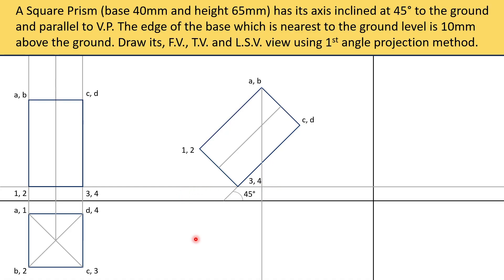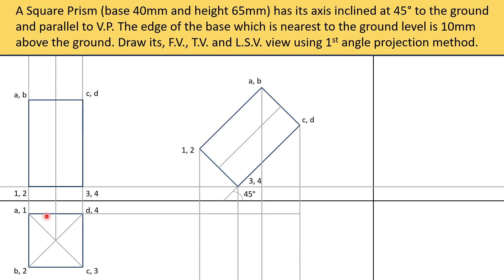Now we need to draw the top view of this object. You can see that we can draw the guiding lines. From A, B we will draw a line. From C, D we will draw another line. From 1, 2 we will draw another line. And from 3, 4 we will draw another line. But still we cannot draw an object here — we need a few more guiding lines to actually lock this part. One line will be coming from A1, D4 joining right here, and B2, C3 will be joining right here. Now we have enough lines to draw the top view, shown here in dark blue.